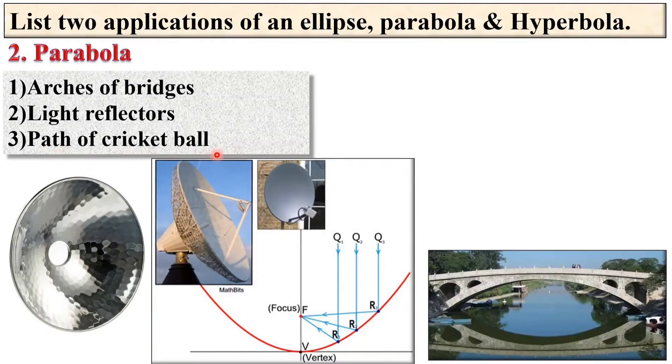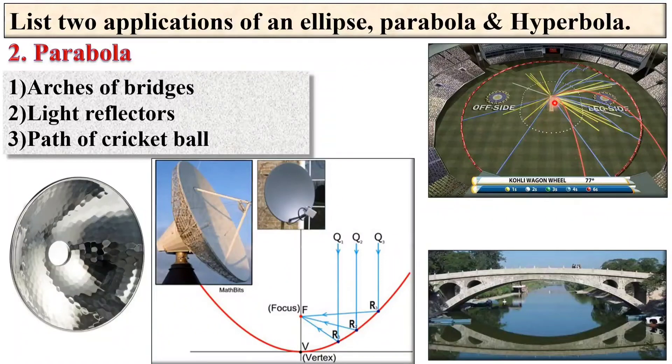Next path of the cricket ball. Here you can see this is actually the path of the cricket ball and this shape is known as the parabola.